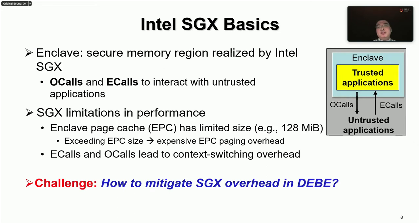Before introducing DBE's design, I would like to present the background of Intel SGX. SGX realizes a shielded execution environment called an enclave in a secure memory region called the Enclave Page Cache. The enclave provides two kinds of interfaces: ecalls permit outside applications to safely access in-enclave contents, and ocalls allow enclave code to issue function calls to outside applications. SGX introduces some performance overhead. First, the size of the Enclave Page Cache is very limited; once memory usage exceeds this limit, it incurs expensive EPC paging overhead. Additionally, both ecalls and ocalls involve hardware operations, introducing high context-switching overhead. Thus, the main design challenge is how to mitigate the SGX overhead in DBE.